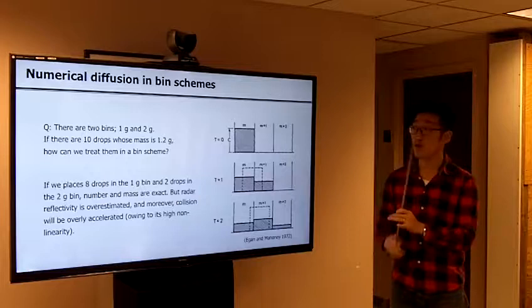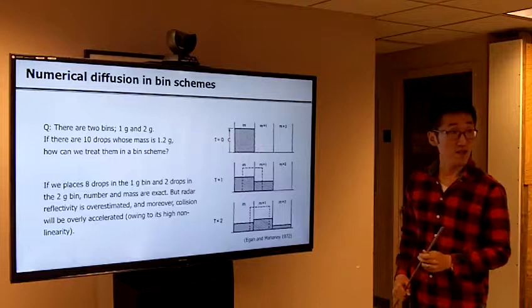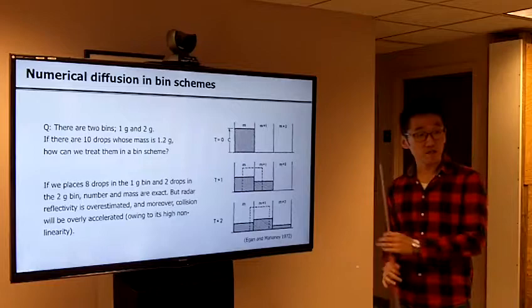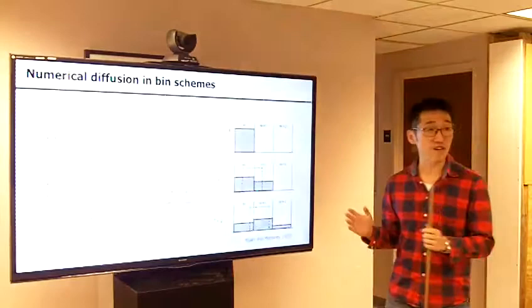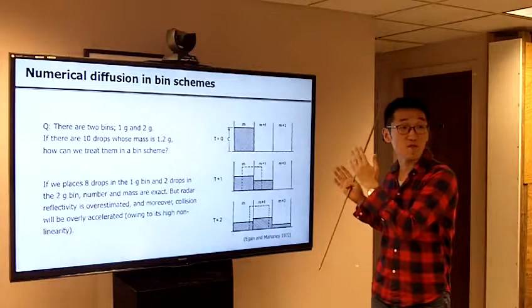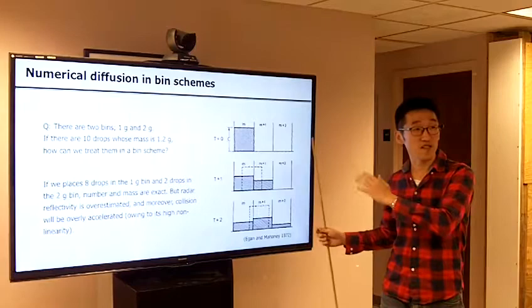Does this diffusion disappear with smaller bin sizes? Even with very small bin sizes, because it is analogous to the advection equation, theoretically there will be some sort of diffusion. The same situation holds in the mass grid system.